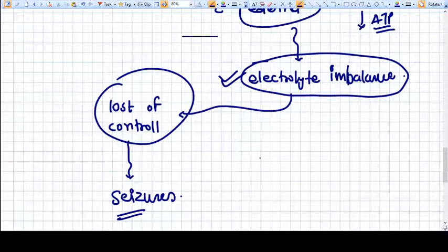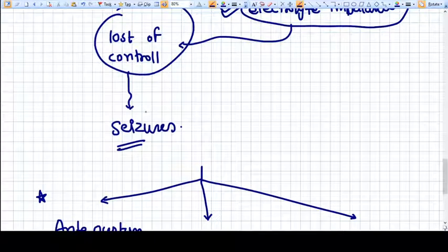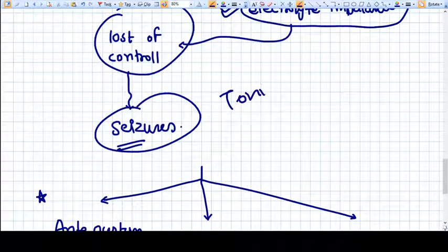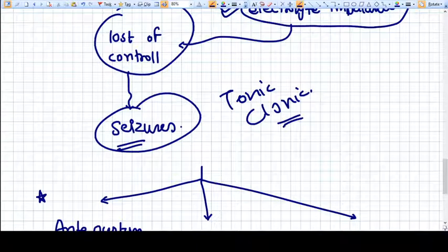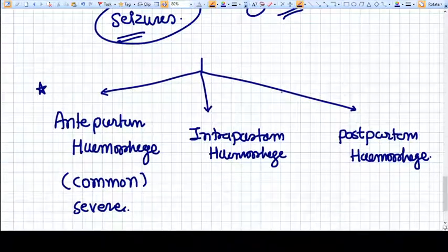So the neurons, many neurons start acting abnormally and firing. That's why the tonic clonic seizure happens in case of preeclampsia.